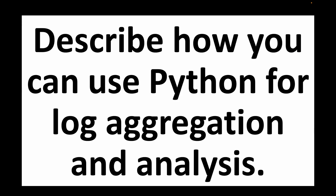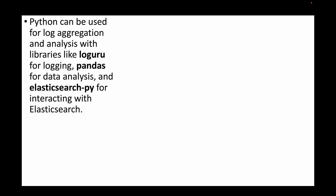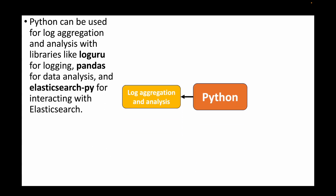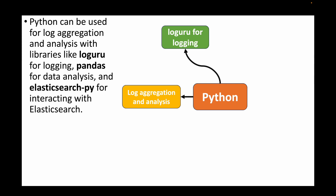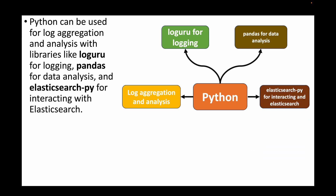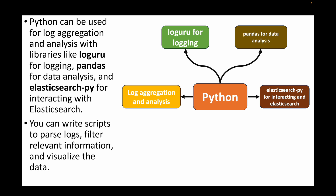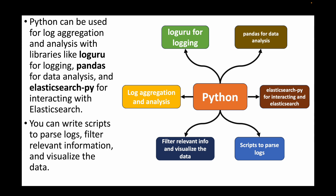The next question is: describe how you can use Python for log aggregation and analysis. Python can be used to aggregate and analyze logs using different libraries: loguru for logging, pandas for data analysis, and elasticsearch-py for interacting with Elasticsearch. We can write Python scripts that parse logs, filter relevant information, and visualize the data. Depending on your use case, these libraries can help you fetch and analyze logs and generate reports.